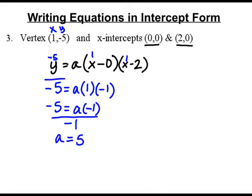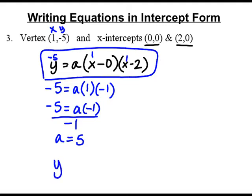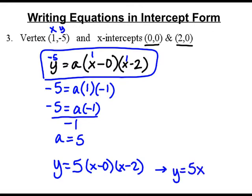So my equation, I take my equation I have back right up here and say y equals my a value 5, x minus 0, x minus 2. Now is x minus 0 the same thing as just x? Yes, so we can actually reduce that. We can say y equals 5 times x, which is 5x, times x minus 2.